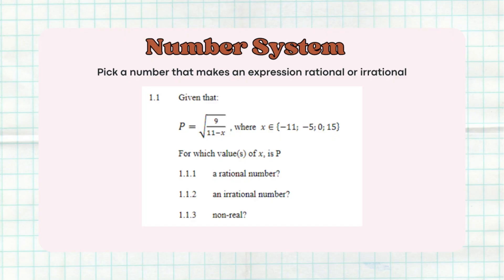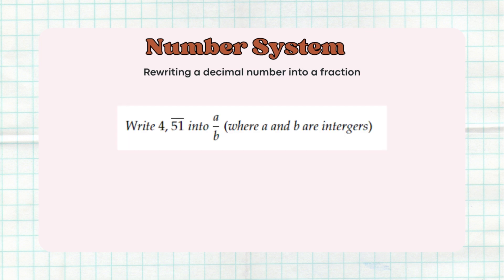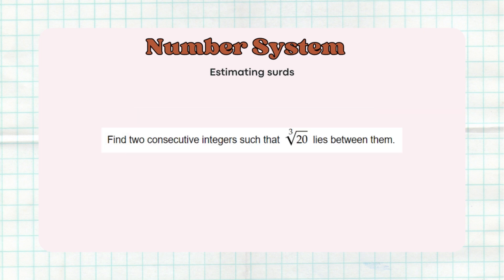Starting with number systems, it's broken up into three types of questions that they can ask you in the test: the first is to pick whether an expression or number is rational or irrational; the second is writing a decimal number as a fraction; and the third is rounding or estimating.